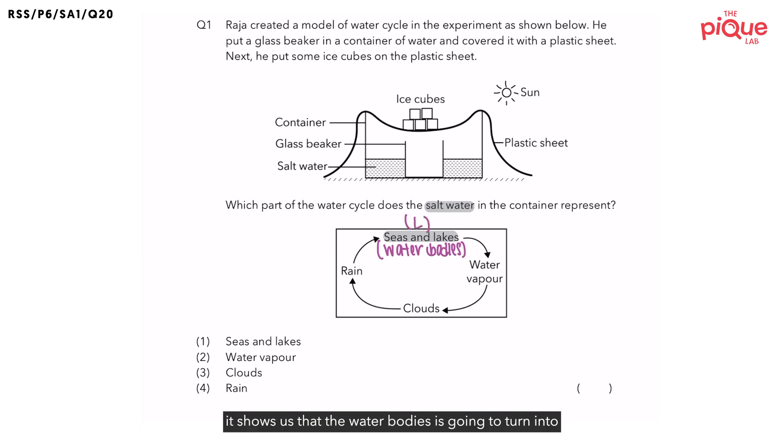Now in this diagram, it shows us that the water bodies is going to turn into water vapor. And water vapor is in which state? Gaseous state. So how do we go from liquid to gas? The water in the water bodies must have gained heat from the sun to evaporate and form this water vapor.